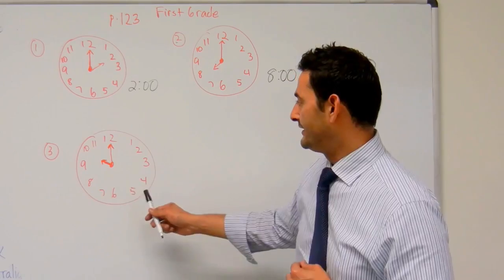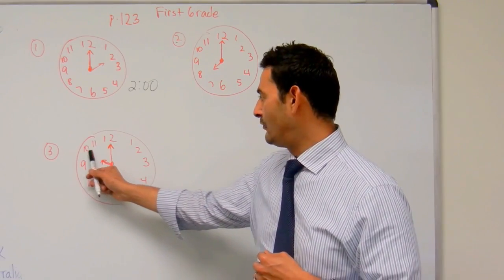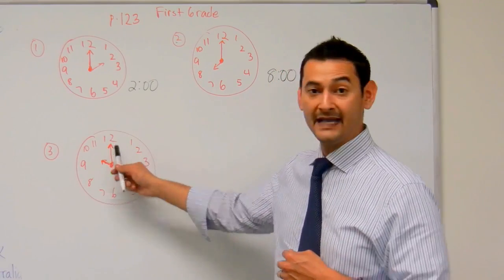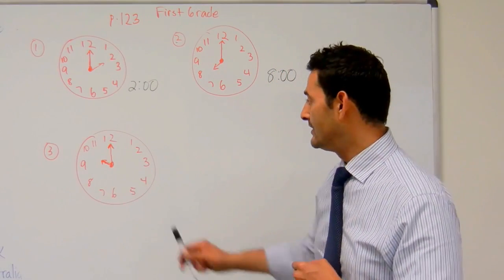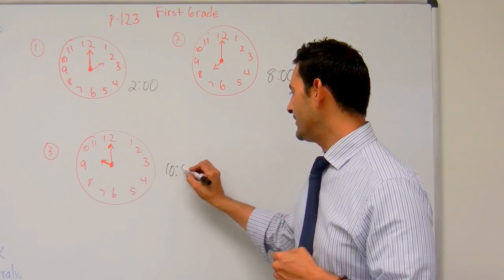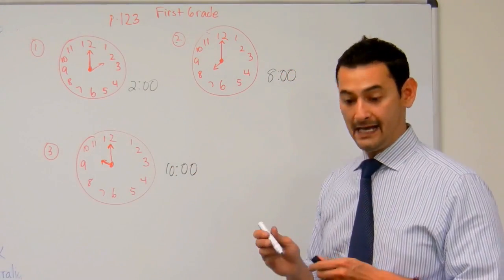Now let's take a look at the next one. This small hand is pointing at the 10, the large hand is pointing at the 12. Remember that 12 is going to be a 0, 0. So here we have 10, the 12 means 0, 0, so that's going to be 10 o'clock.